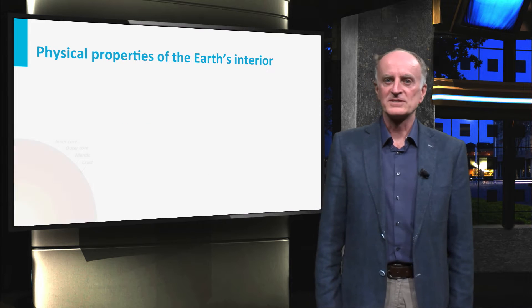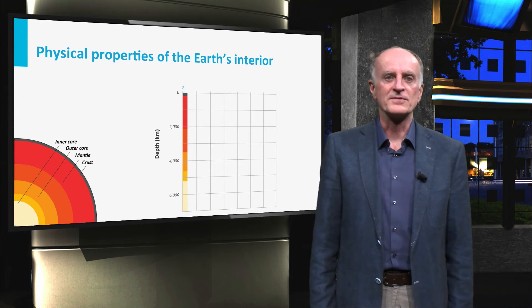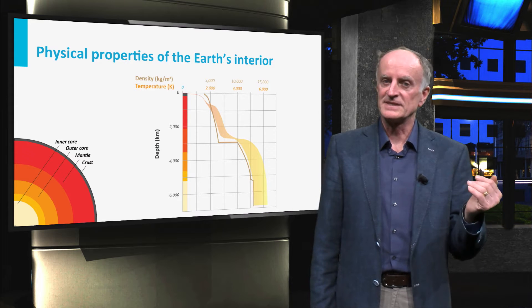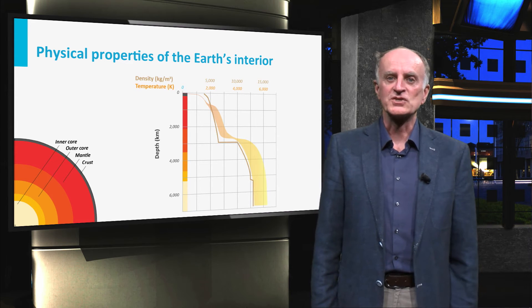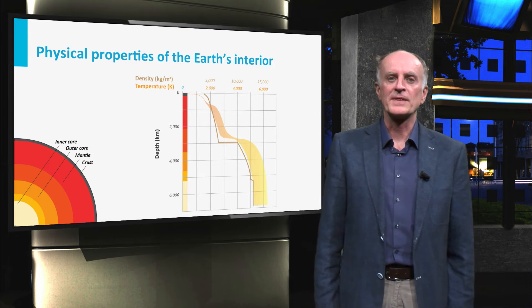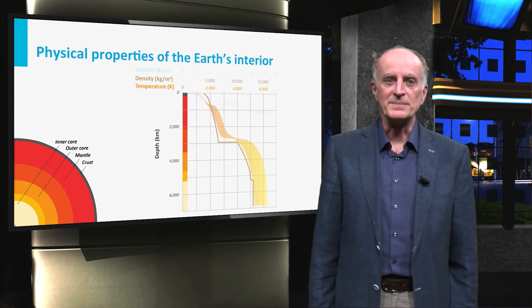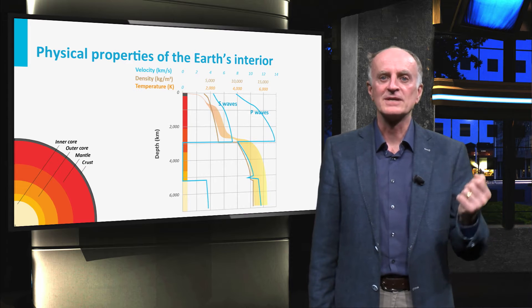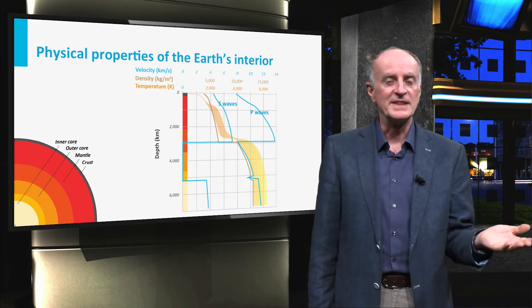We use physical properties to infer the first-order features of the Earth. Temperatures and densities increase with depth, but show a sharp increase around 3000 km depth. P waves increase from the surface to a depth of around 3000 km, decrease and then pick up again.